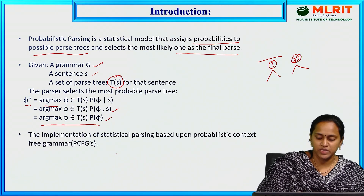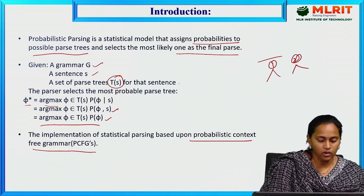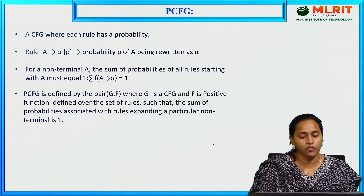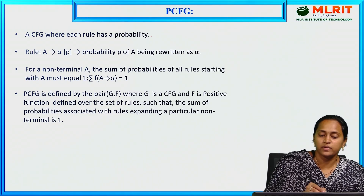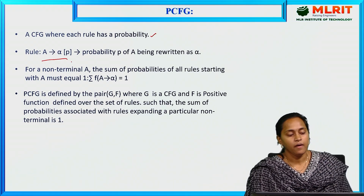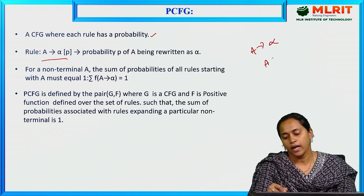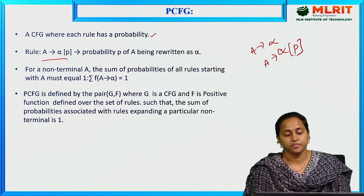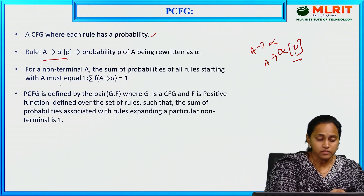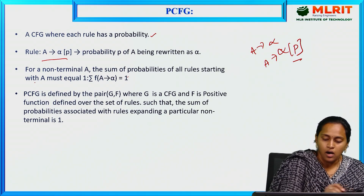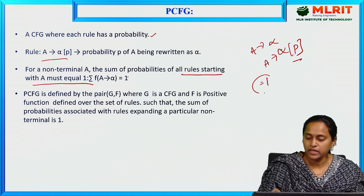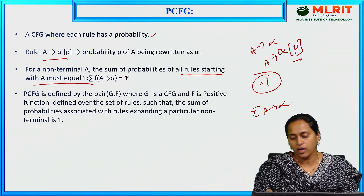For the implementation of statistical parsing, we use the Probabilistic Context Free Grammar. A CFG where each rule has a probability — the rule is A → alpha. Here we add a probability P, meaning the probability of A being rewritten as alpha. For non-terminals, the sum of probabilities of all rules starting with A must equal 1. That is, the sum of P(A → alpha) equals 1.